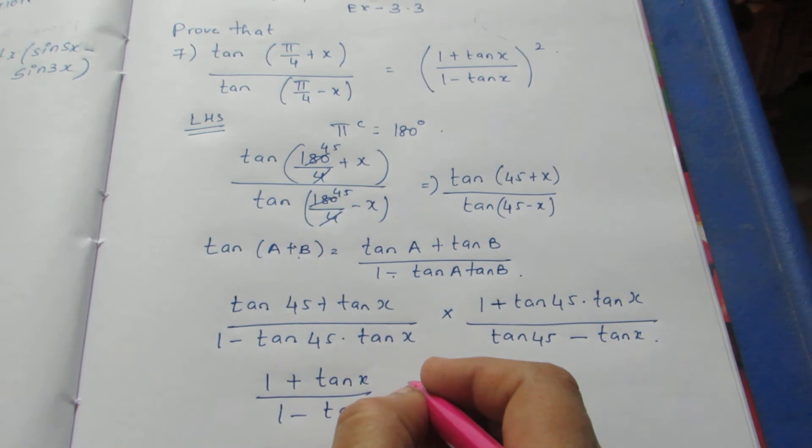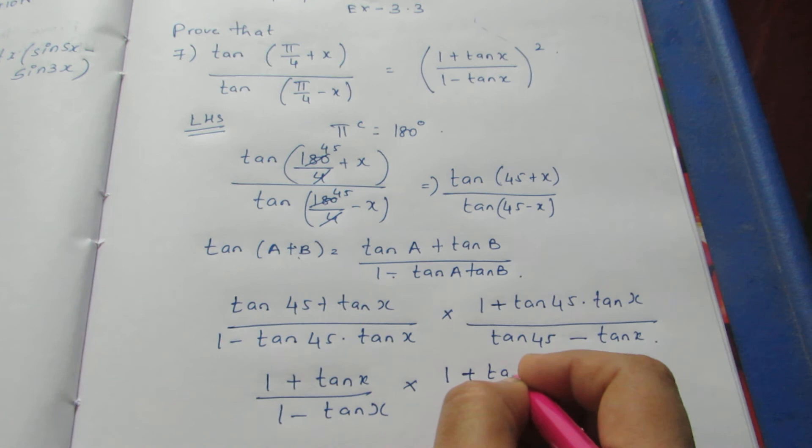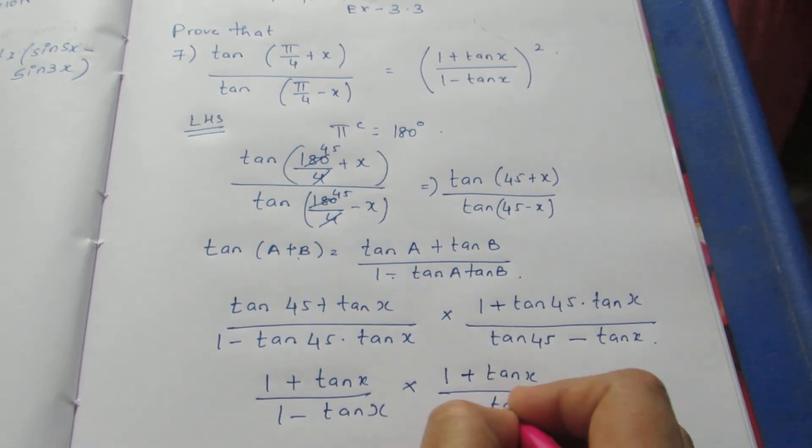So 1 times tan x will become (1 - tan x) into (1 + tan x) by (1 - tan x).